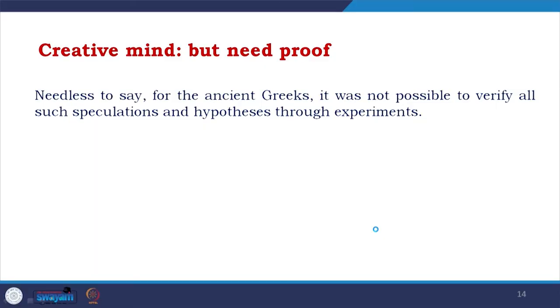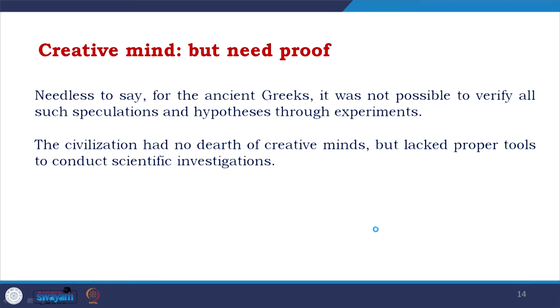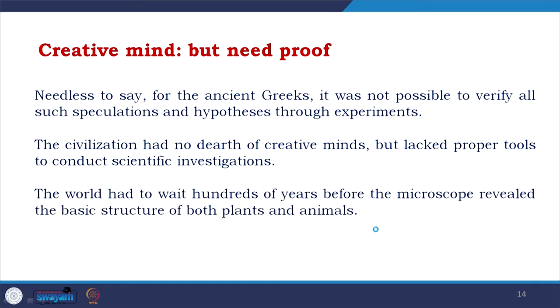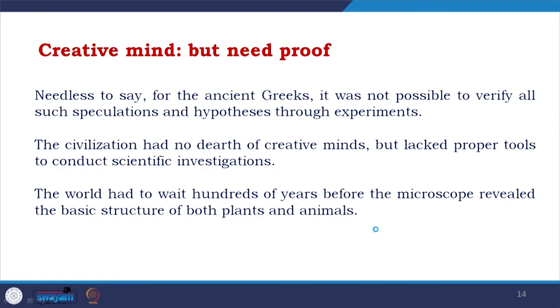But it was not possible for them to verify all such speculation and hypotheses through experiments. The civilization had no dearth of creative minds, but lacked proper tools to conduct scientific investigations. The world had to wait hundreds of years before the microscope revealed the basic structure of both plants and animals. Let us see how, from the initial creative minds, more effective tools came and how they helped biology to proceed further.